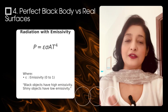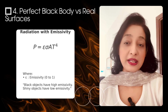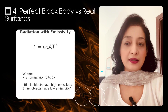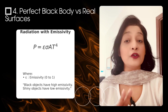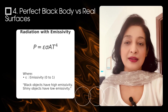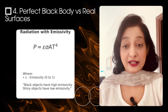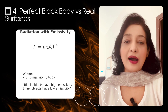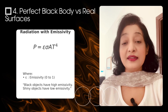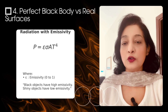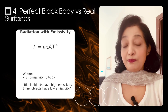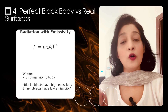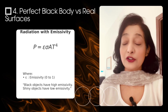The formula above applies to an ideal surface called a perfect black body — a material that absorbs and emits all radiation perfectly. But real objects are not such perfect emitters, so we modify the equation by adding E, that is emissivity, which ranges from 0 to 1. Black objects have high emissivity; shiny objects have low emissivity.